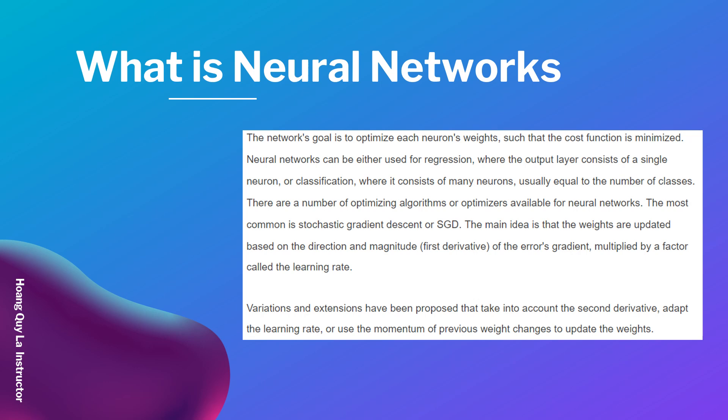Usually the number of output neurons equals the number of classes. There are a number of optimizing algorithms available. The most common is stochastic gradient descent (SGD). The main idea is that the weights are updated based on the direction and magnitude, which is the first derivative of the error's gradient multiplied by a factor called the learning rate. Variations also take into account the second derivative, adapt the learning rate, or use the momentum of previous weight changes.